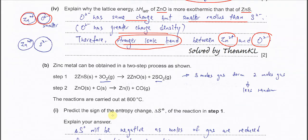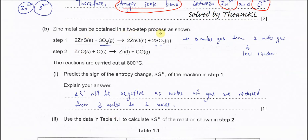Part B: zinc metal can be obtained in a two-step process as shown in step one and step two. From the first step, zinc sulfide reacts with oxygen to form zinc oxide and SO₂. We look at the number of moles of gas involved. Before reaction, there are three moles of gas, so more gas molecules is more random, entropy is higher.